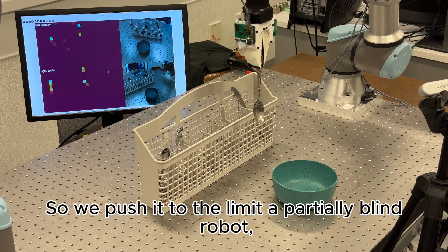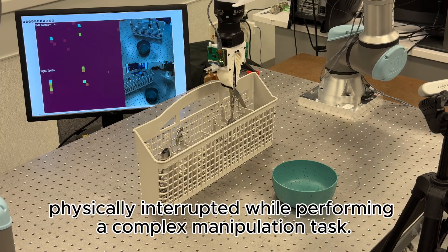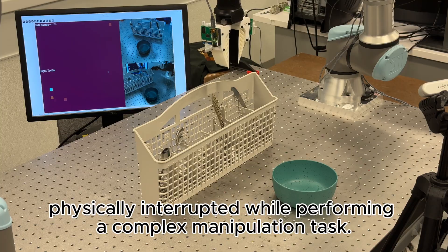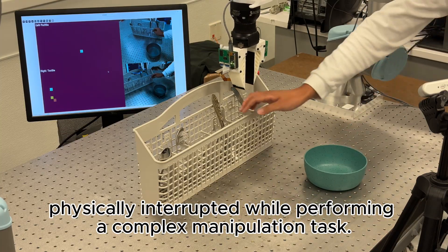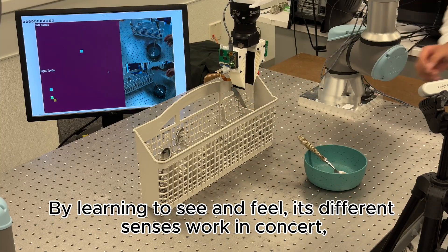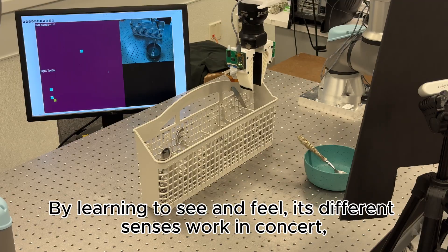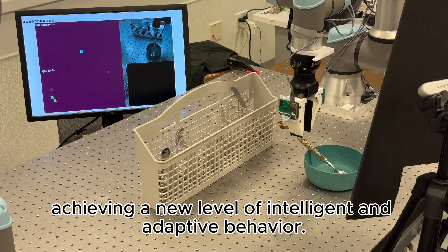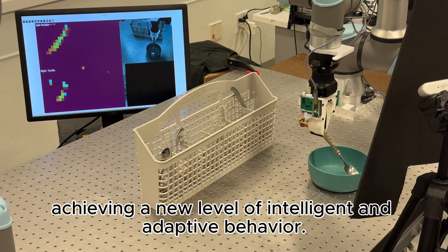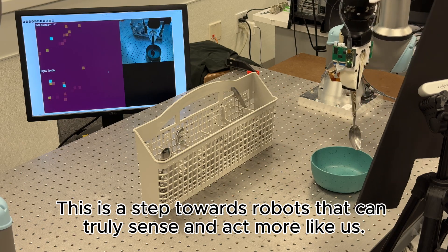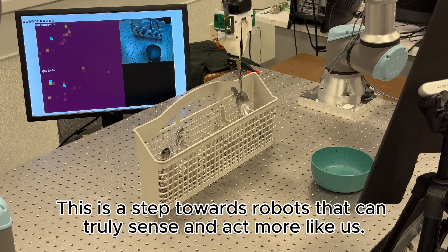So we push it to the limit: a partially blind robot, physically interrupted while performing a complex manipulation task. By learning to see and feel, its different senses work in concert, achieving a new level of intelligent and adaptive behavior. This is a step towards robots that can truly sense and act more like us.